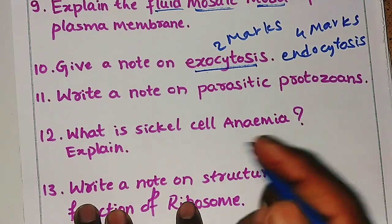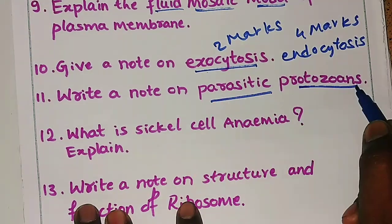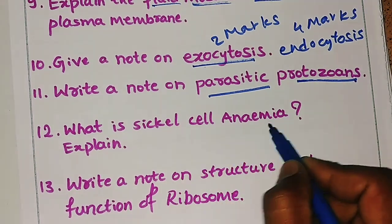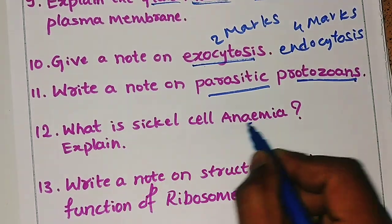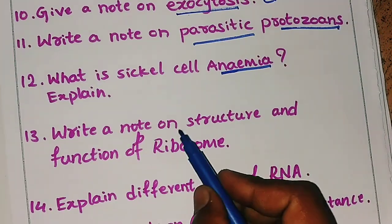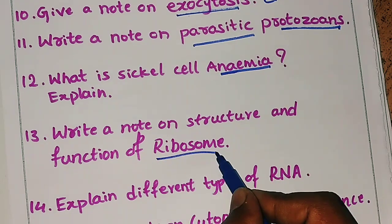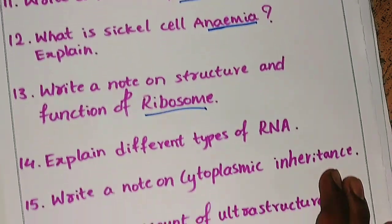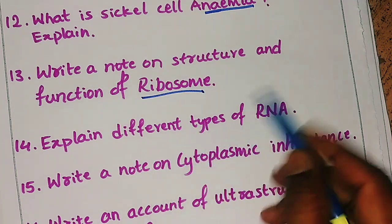The eleventh question is: write a note on parasitic protozoans. The twelfth question is: what is sickle cell anemia — explain it. The thirteenth question is: write a note on the structure and function of ribosome — you have to write both the structure and function.